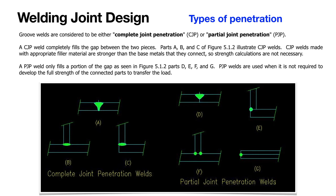A weld can either be CJP or PJP. CJP means complete joint penetration and PJP means partial joint penetration. In the figures, examples A, B, and C are CJP joints, while figures D, F, and G are examples of PJP joints. These are important for subsequent weld calculations.